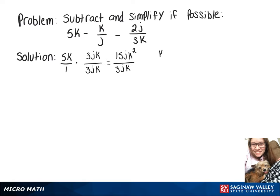So now we'll look at our k over j and multiply that by 3k over 3k. And that'll give us 3k squared over 3jk.